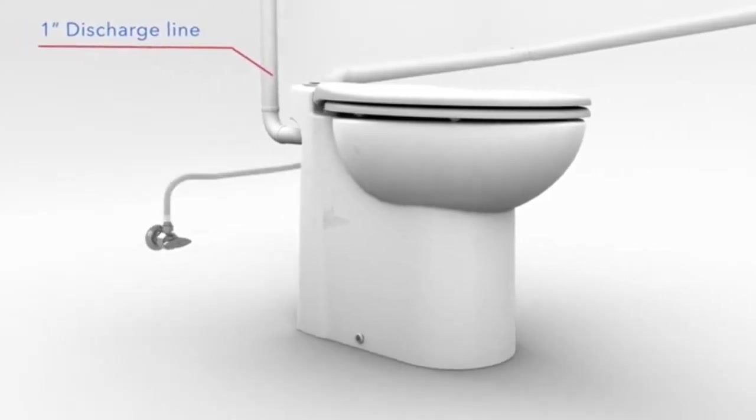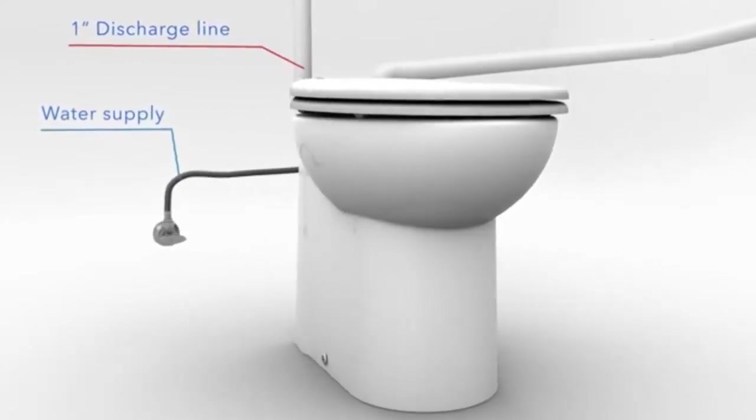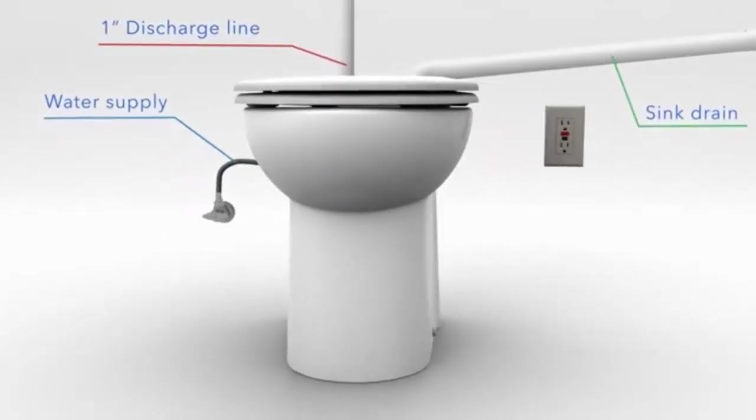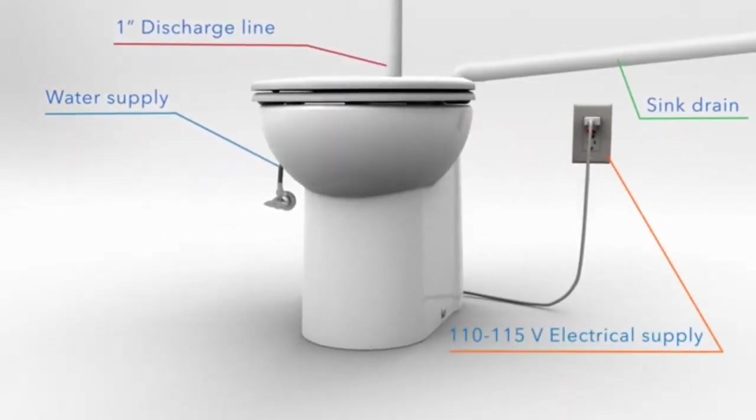This simple installation would require a 1-inch discharge line, a water supply connection, a sink drain pipe if needed, and the standard 110-volt power supply. The Sanicompact self-venting system doesn't require a vent pipe. Check with your local plumbing official for more information.